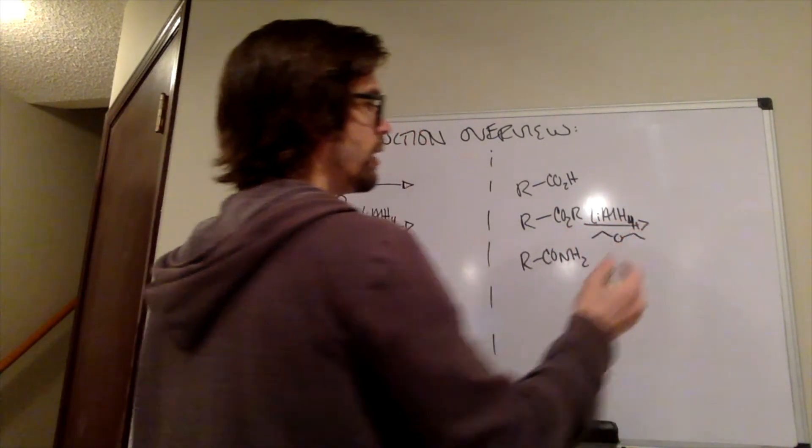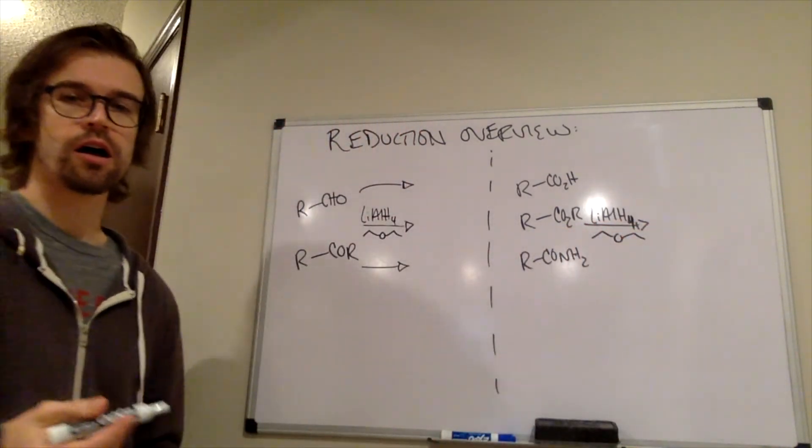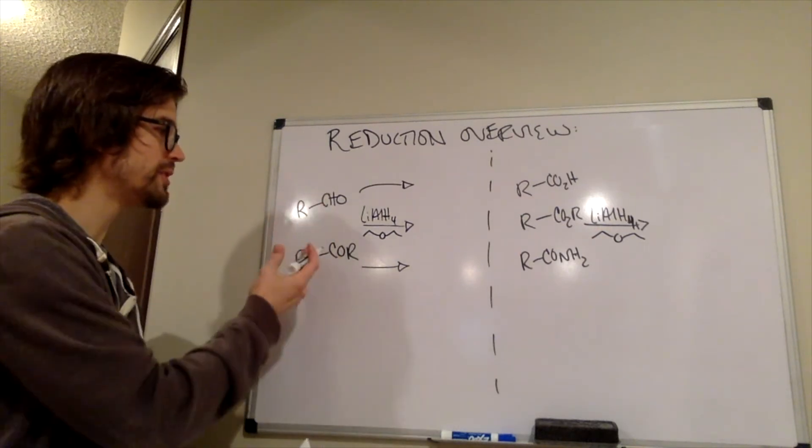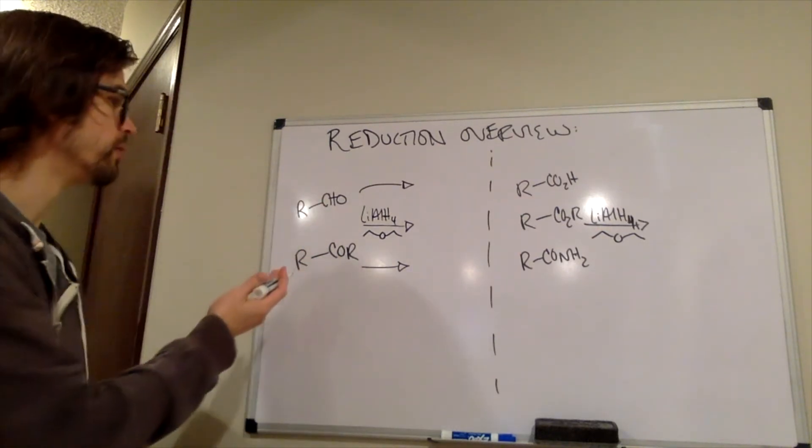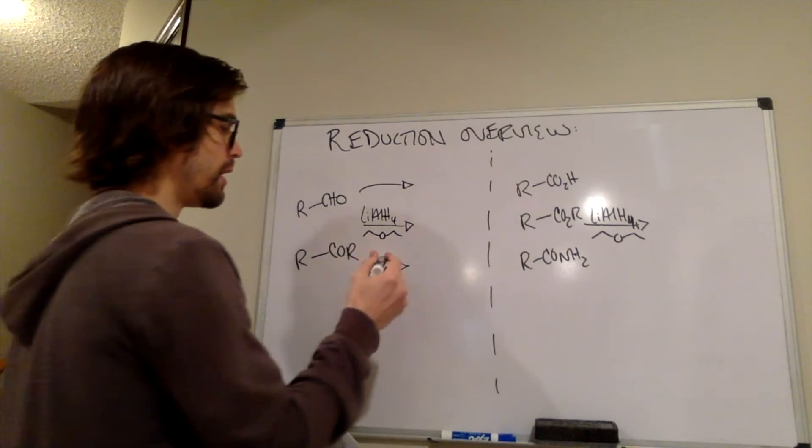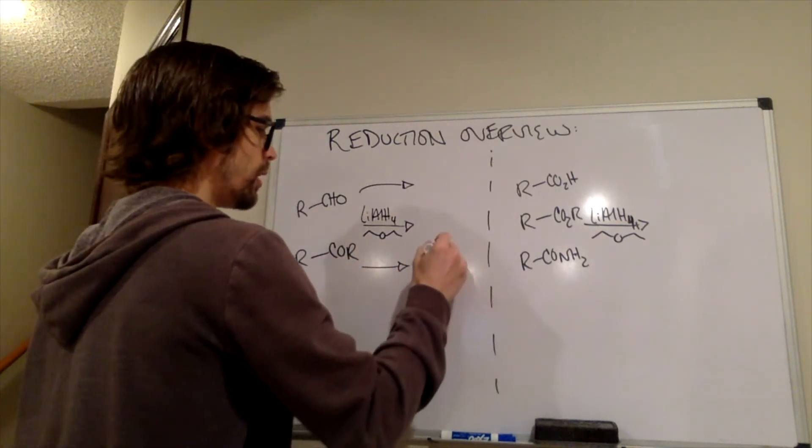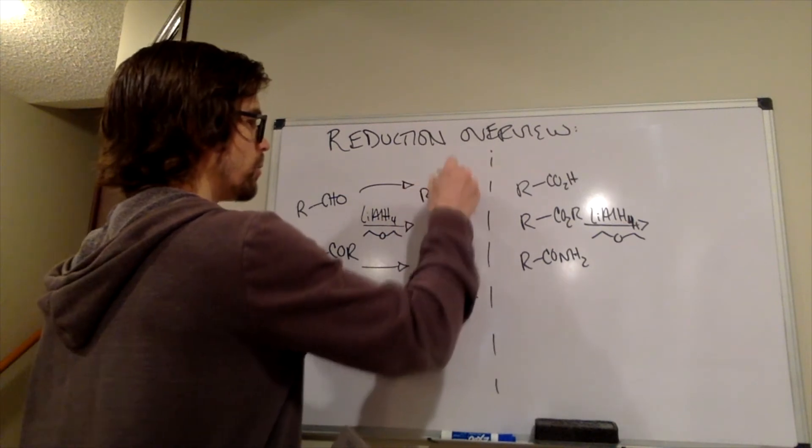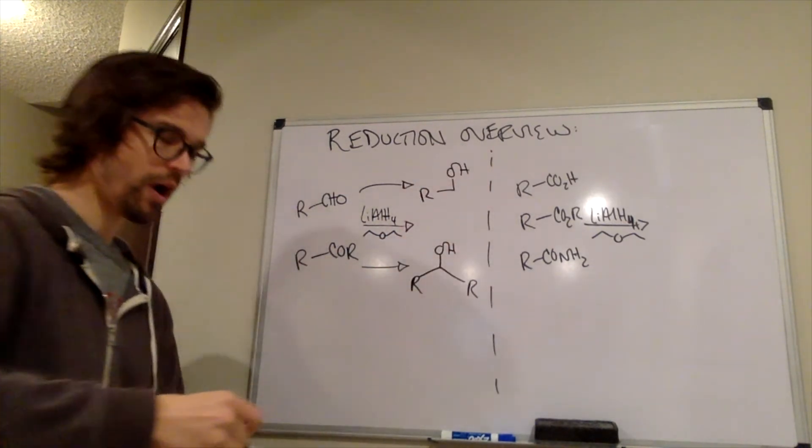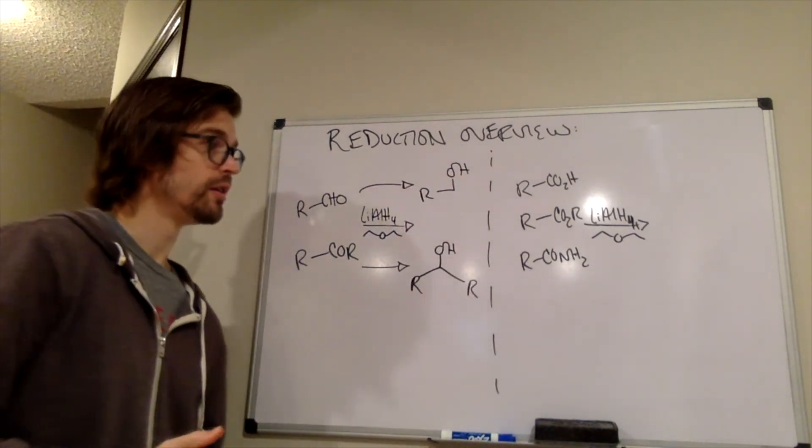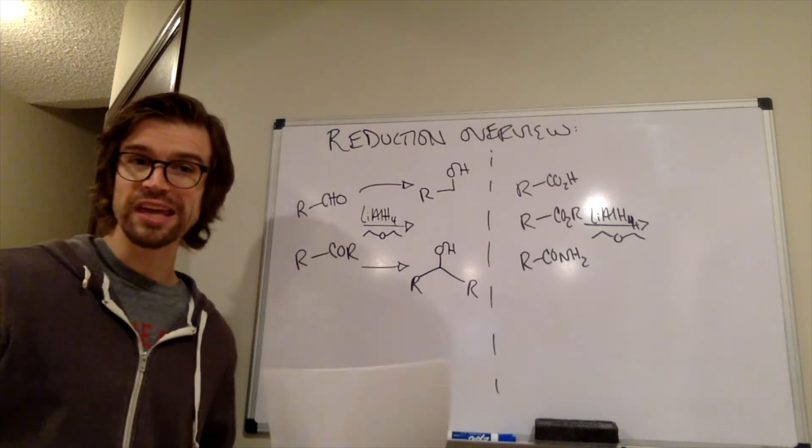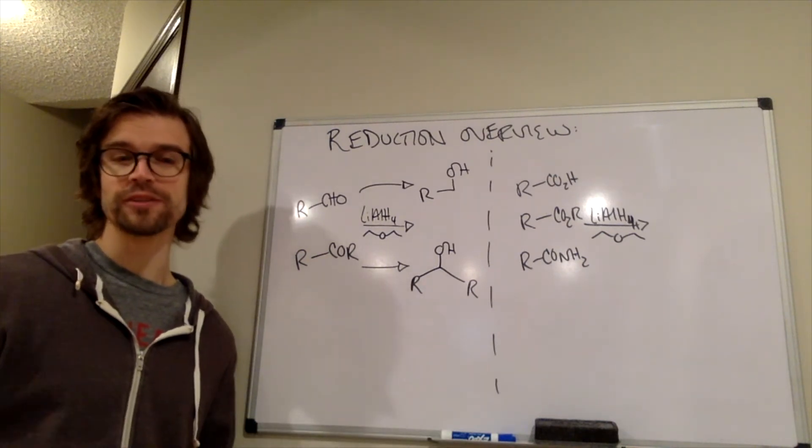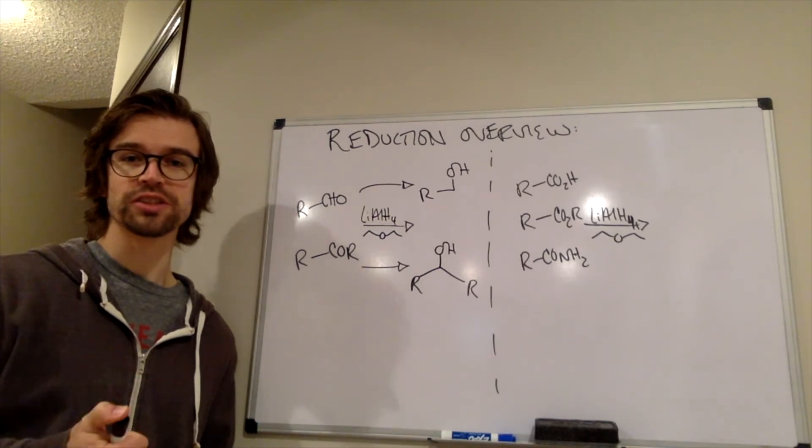And it's going to form the same thing that sodium borohydride would have with the aldehyde. And the ketone will form our secondary alcohol or our primary alcohol. Why do we need to know about both of them? Well, what about chemoselectivity? We talked a lot about chemoselectivity with some of these reductions.